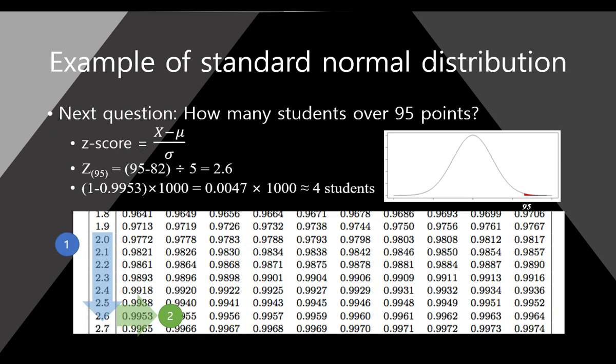One more question: how many students scored over 95 points? This is our normal distribution, and this point — this is 95. Very small number, maybe, because the probability is very small. The G-score of 95 is 95 minus 82 divided by 5, which is 2.6. If you find 2.6 in the table, 2.60 is 0.9953. But this number is the whole left side, so we just do 1 minus this number to get our probability. Multiply by 1,000 — that is about 4 students. So it means that in our math exam, about only 4 students have over 95 points.